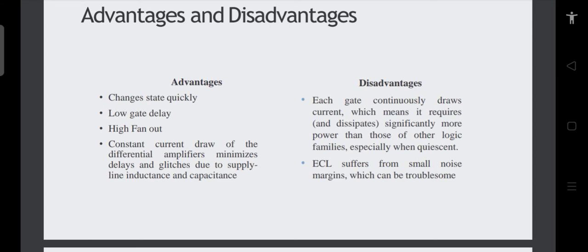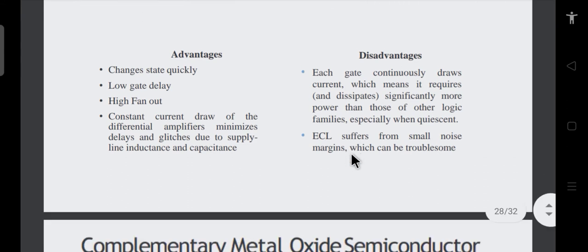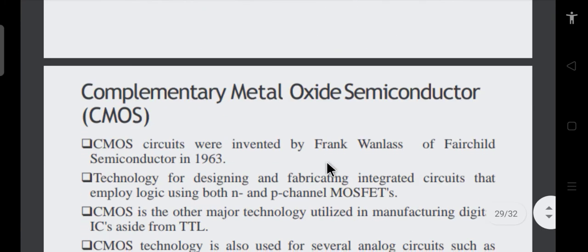The disadvantages of ECL are that each gate continuously draws current because both complementary circuits are always in operation. Although the amount of hardware required to implement a circuit is small, the power dissipation is high because both circuits are continuously operating. ECL also has low noise margins because the high and low voltage levels are very close to each other.